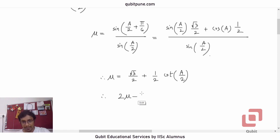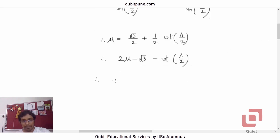Subtract √3. So 2μ minus √3 will be cot of A/2. Therefore, A is equal to—